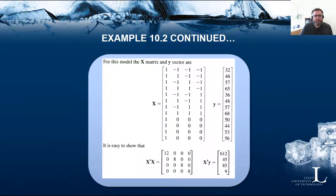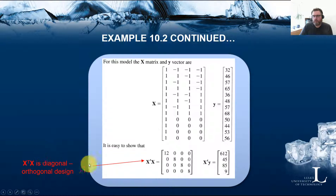In the example, they show the X matrix — the design matrix completed with the first column of only ones — and the response vector Y. We calculate X transpose X and get a diagonal matrix with 12, 8, 8, 8 on the diagonal. They also calculate X transpose Y, which gives the column vector: 612, 45, 85, and 9.